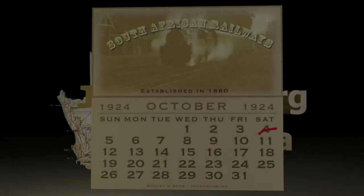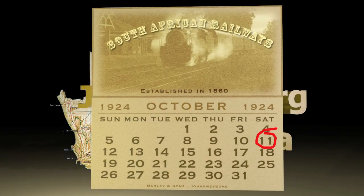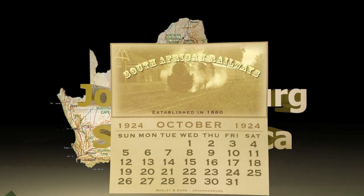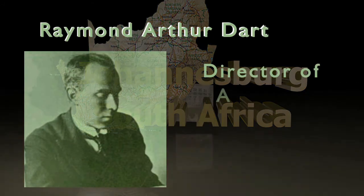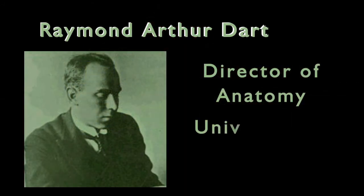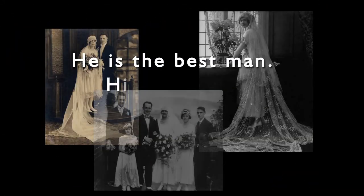It is October 11, 1924, a Saturday in Melrose, an upper-class area of Johannesburg, South Africa. Raymond Arthur Dart, the young director of anatomy at the University of Witwatersrand, is getting dressed for a wedding. He is the best man. His wife Dora is urging him to hurry.